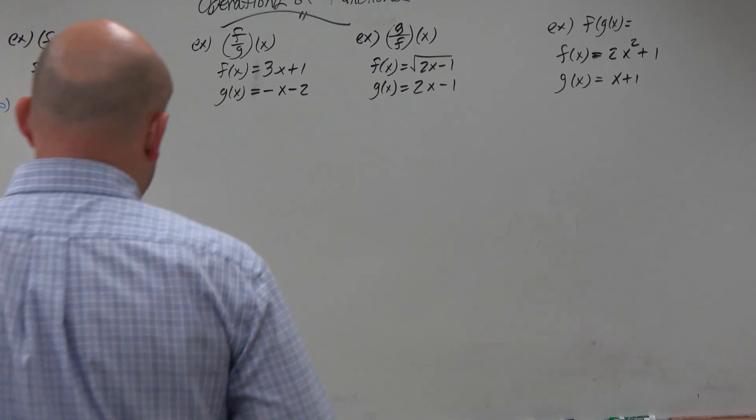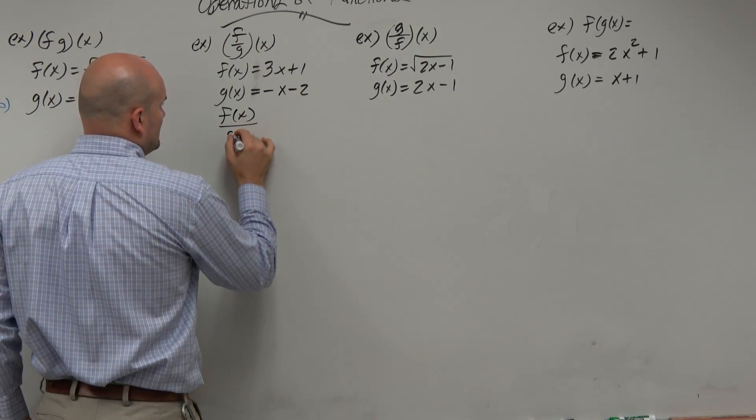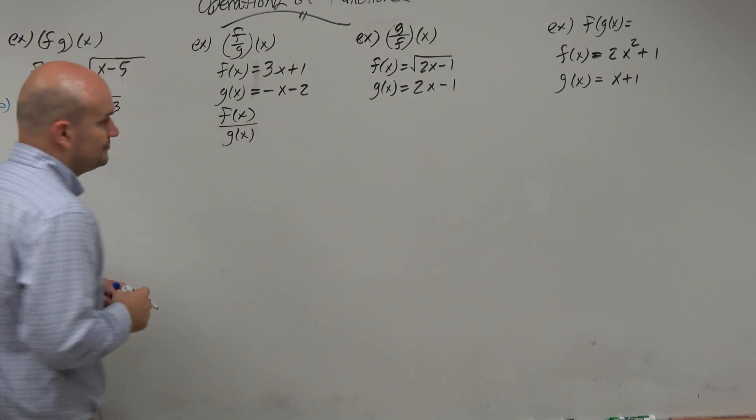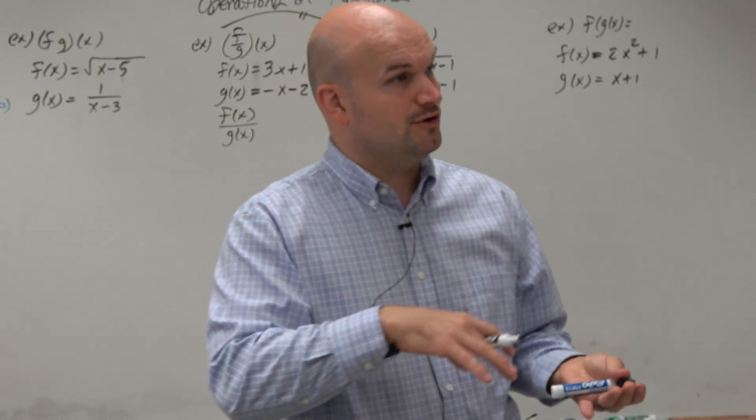So when we're looking at division, we have f of g of x. So that's basically asking us, what is f of x divided by g of x? And that's all we're basically doing. So we've just got to take one function and put it over the other function.